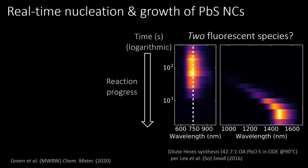We then sought to identify cluster species in the synthesis of PbS nanocrystals. Measuring the emission spectrum of aliquots extracted during a reaction under dilute conditions, we observed our first evidence of the presence of such a cluster. As time progresses, shown from top to bottom on the y-axis, we initially observed an emission feature at 735 nm. This feature grew in intensity without changing position or shape. As the intensity reached a maximum, a new red-shifted feature consistent with nanocrystals could be observed, continually shifting to lower energies until the feature at 735 nm had disappeared.